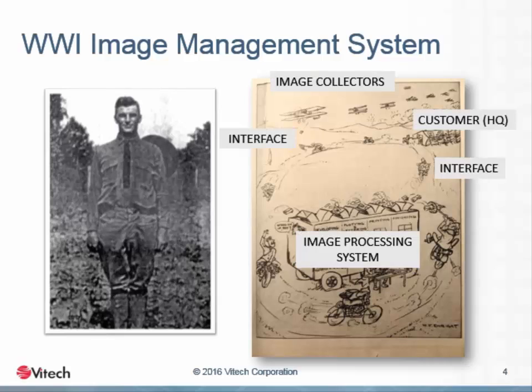For our convenience in translating this system into the modern day, we've created generic labels for the elements of the system. The airplanes we have labeled as image collectors. The photographic lab is the image processing system, and the headquarters is the customer. The motorcycles form the interfaces between the image collectors and the image processing system, as well as between the image processing system and the customer. Taken together, these made up the reconnaissance system in use on the battlefield in France in World War I.